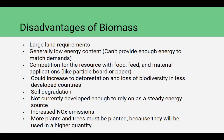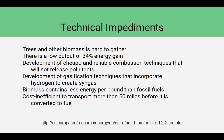With more harvesting, you have to plant more trees because you'll be using them in higher quantity. What we've discovered in trying to utilize more biomass is that trees and other biomass are pretty hard to gather, with a fairly low energy output — about 34% energy gain. Development of cheap and reliable combustion techniques that won't release pollutants is a noble goal. The development of gasification techniques incorporating hydrogen into syngas may be one of the more interesting areas to explore. Overall, biomass contains less energy per pound than fossil fuels, and it's fairly cost-inefficient to transport for more than 50 miles before it's converted to fuel.